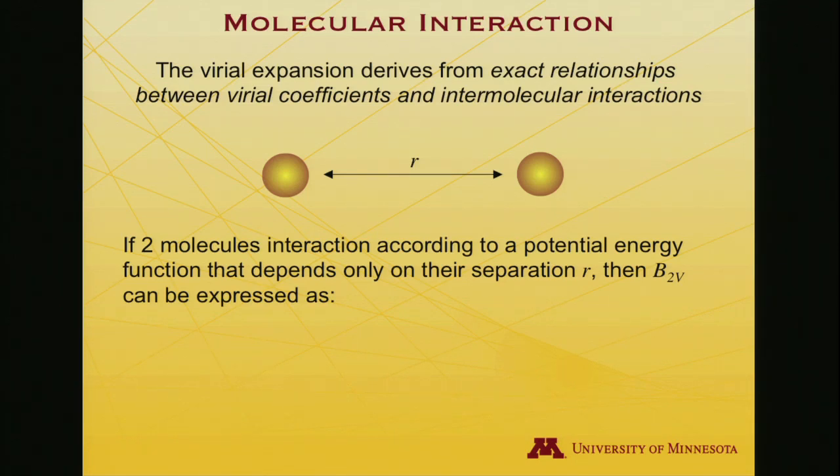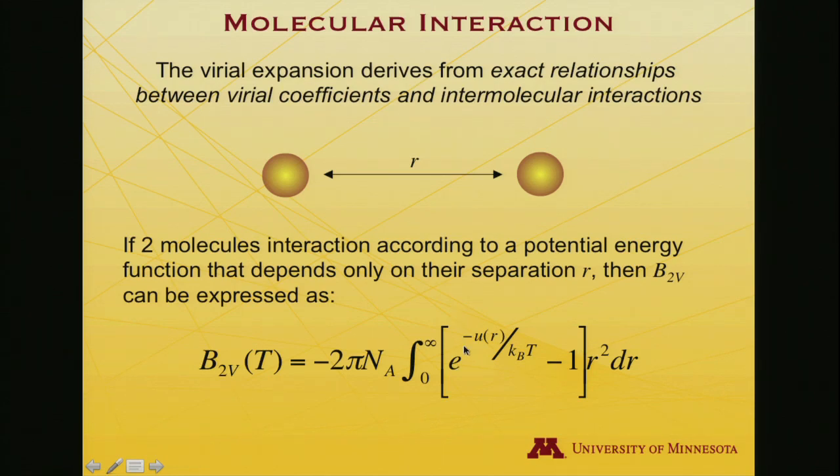If the energy of their interaction depends only on that distance, then B₂V can be expressed as minus 2π times Avogadro's number, 6.02 times 10 to the 23rd, the integral from 0 to infinity. That integral is ranging over R, from overlapping particles at R equals 0, all the way out to infinite separation. And the argument of the integral is the exponential of minus U of R, divided by kᵦT.